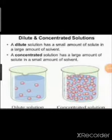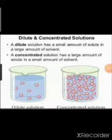A concentrated solution has a large amount of solute in a small amount of solvent. Because it contains more solute, it is called a strong solution. Whereas a dilute solution contains less solute and is called a weak solution. To compare: a dilute solution has a small amount of solute in a large amount of solvent, while a concentrated solution has a large amount of solute in a small amount of solvent.